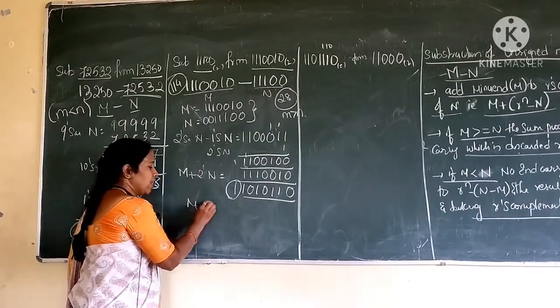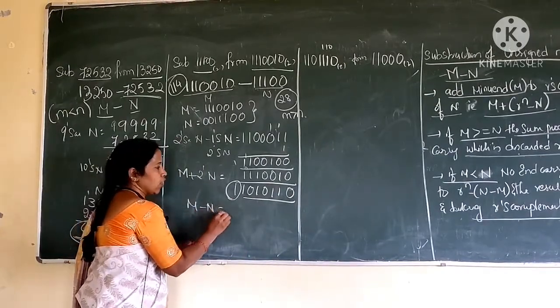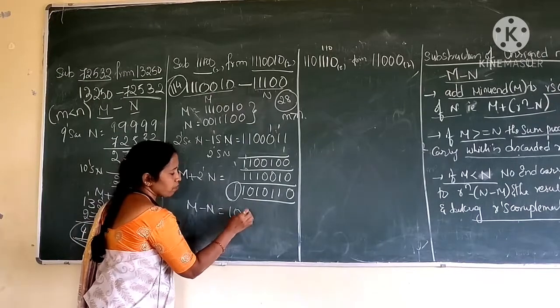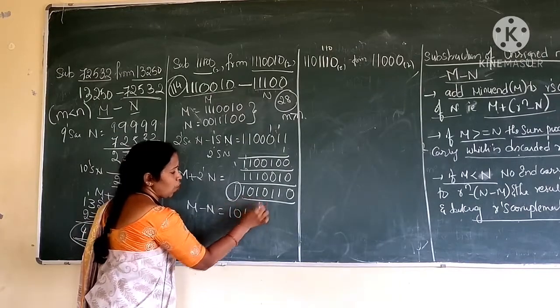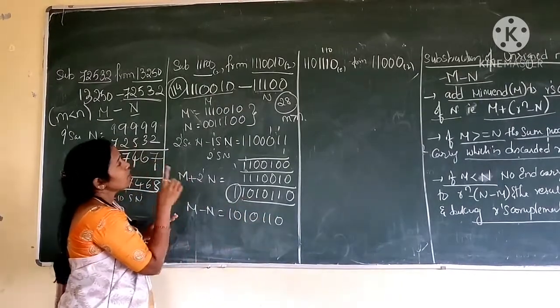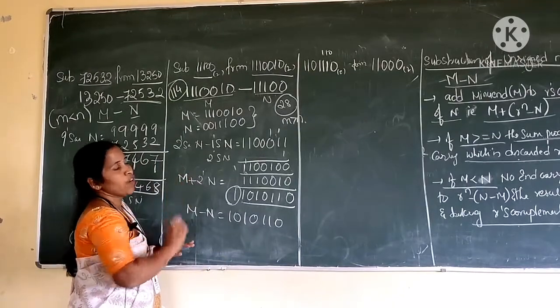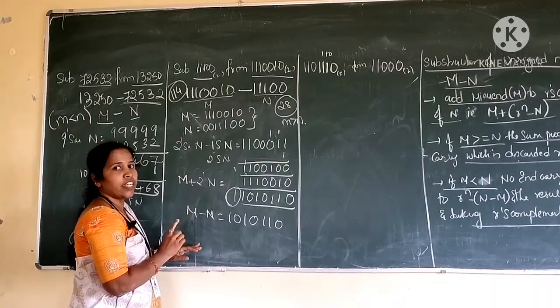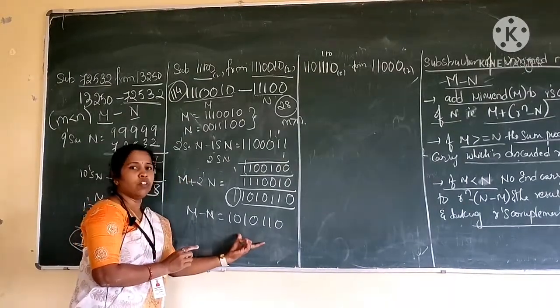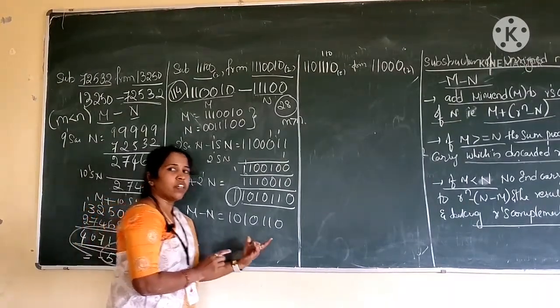This will be the answer. So m minus n equals 1010110 — that is the binary result. So 114 minus 28 gives this value.